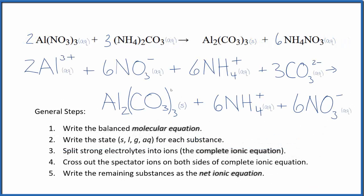Now we can cross out the spectator ions that are on both sides of the complete ionic equation: reactants on top, products on the bottom. We have these six nitrate ions here in the reactants; we also have six nitrate ions here in the products. So these are spectator ions; we can cross these out.